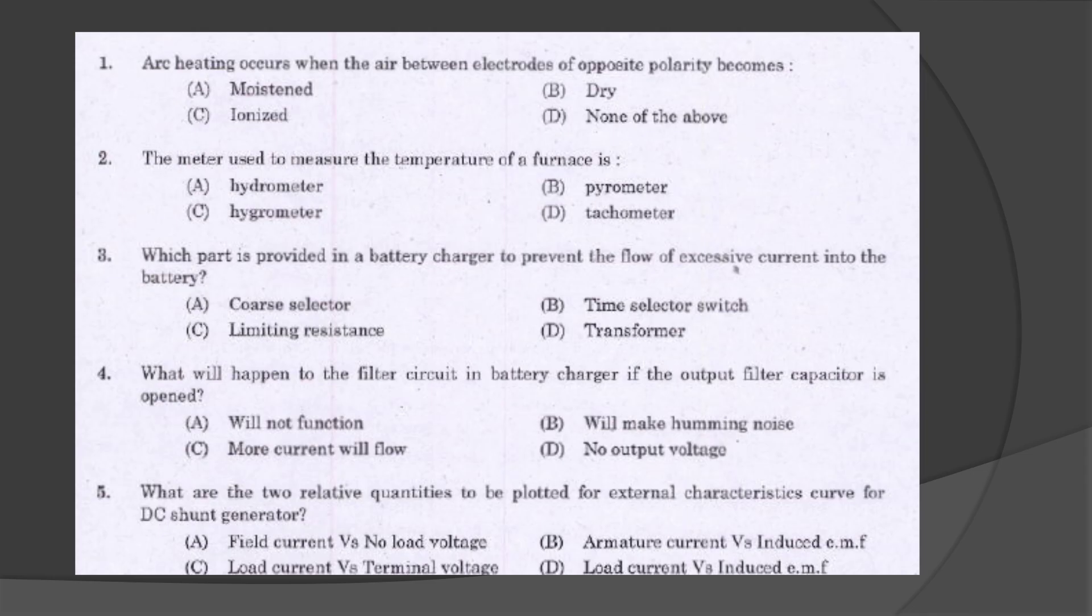The first question: arc heating occurs when the air between electrodes of opposite polarity becomes ionized. The meter used to measure the temperature of the furnace.